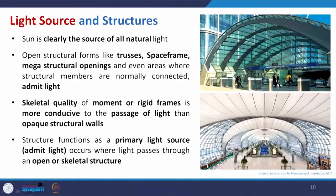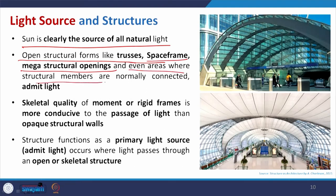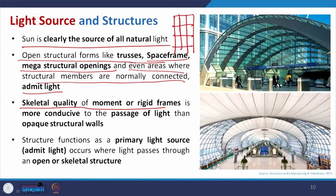Where a system is lined and joined together with truss-type material it will be more effective. The sun is clearly the source of natural light, and open structural forms like trusses, space frames, and mega structural openings — even areas where structural members are normally connected — can admit light if arranged properly. To get light inside you have to have some opening. That is why the skeletal quality of moment or rigid frames, with structural glazing using glass, allows more light to pass through.